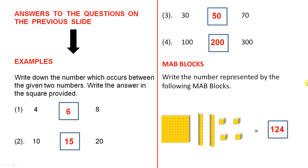So these are the answers now for the previous slide. The number halfway between 4 and 8 is 6. The number halfway between 10 and 20 is 15. The number halfway between 30 and 70 is 50. And the number halfway between 100 and 300 is 200.